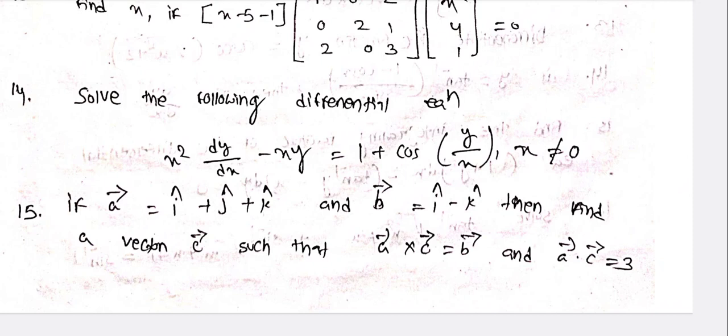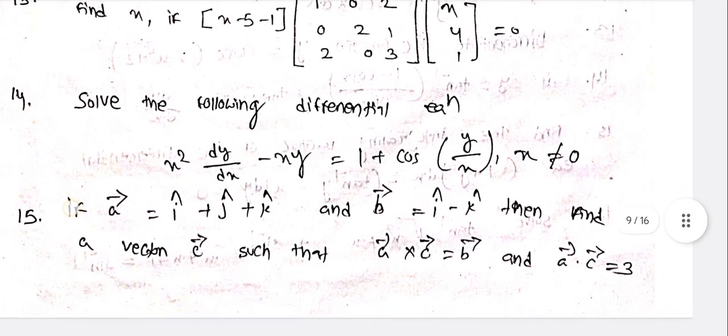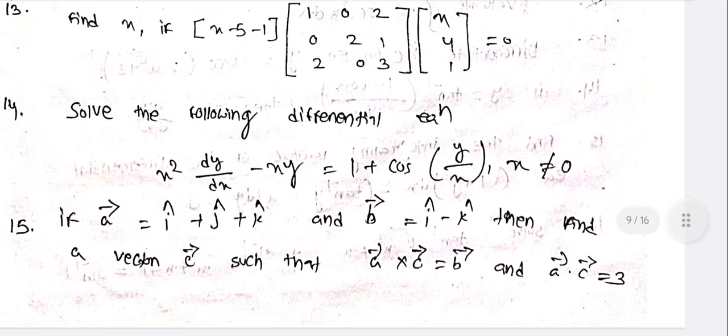If vector a = i + j + k and vector b = i - k, then find vector c such that a⃗ × c⃗ = b⃗ and a⃗ · c⃗ = 3.